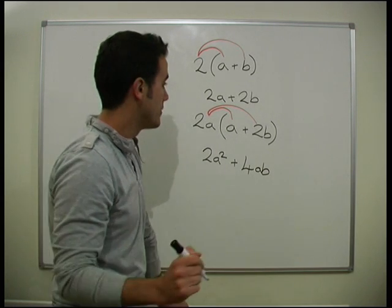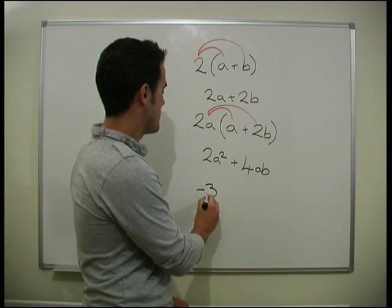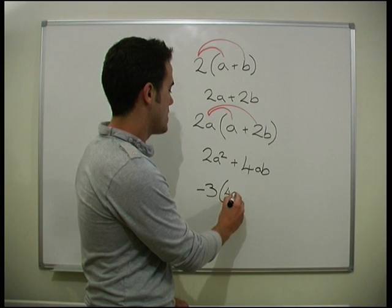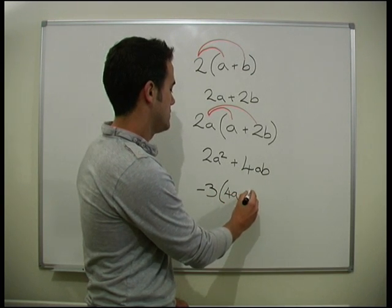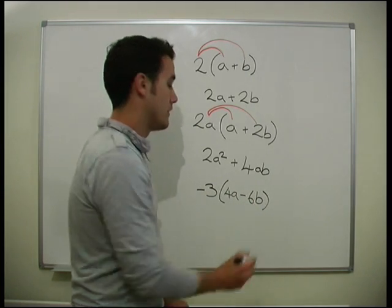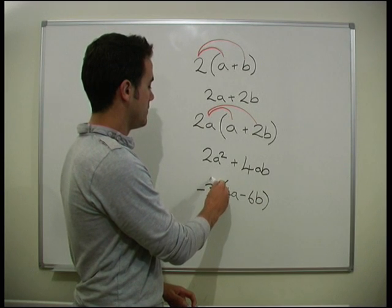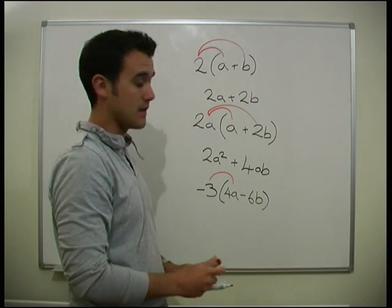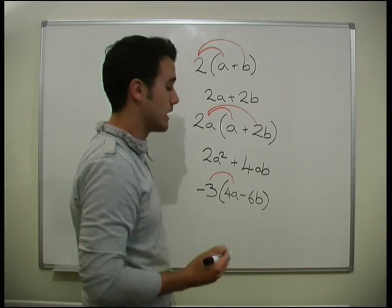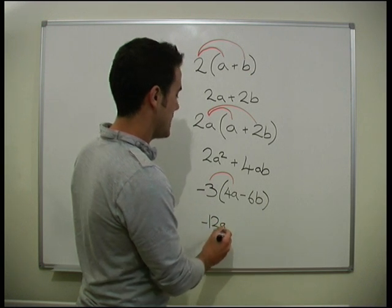One last example on this one. We've got a minus 3 out front. OK, and inside we've got 4a minus 6b. So, what are we going to get here? Well, we need to do minus 3 times 4a. Minus 3 times 4. Minus and a plus, we get a minus. So, we get minus 12a.